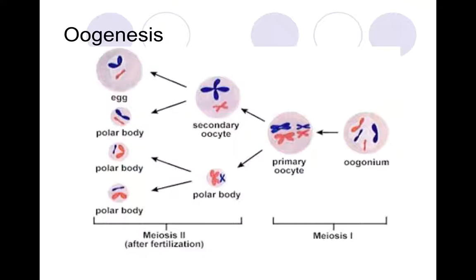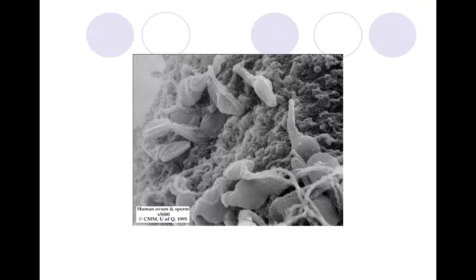Here's what happens in oogenesis — this is where we get the development of one egg and we end up with three polar bodies. The genes aren't quite the same in the polar bodies as they are in the egg; it's almost a way of having chromosomes that may not be quite right go into these bodies — kind of like a dumping ground. Here's a great electron microscope picture of sperm on an ovum.